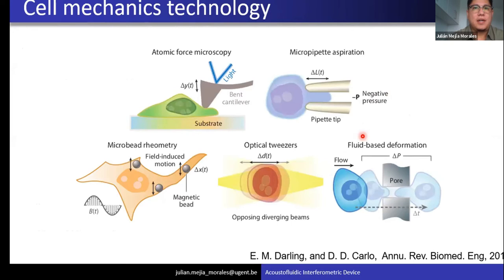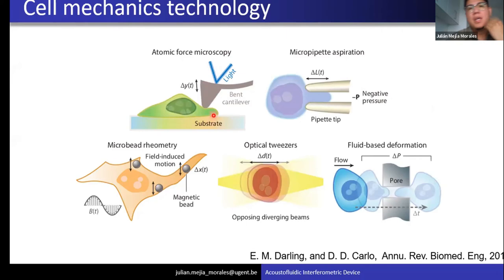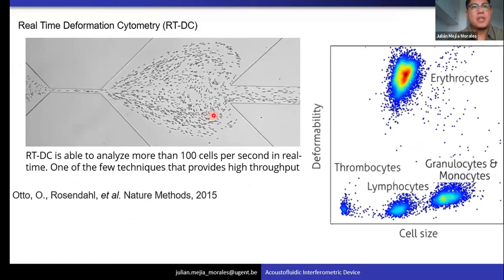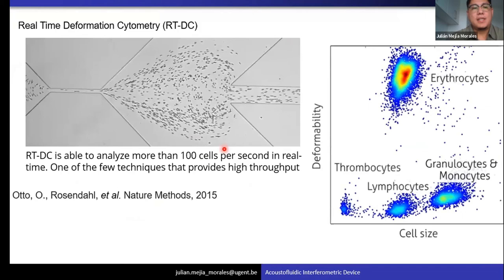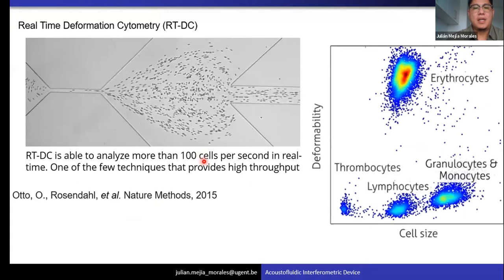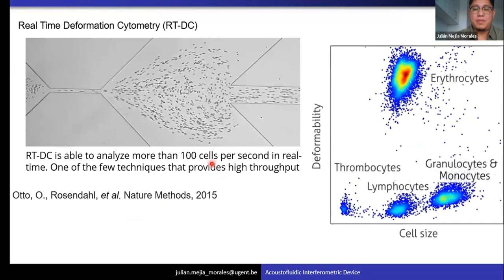This is not new. There exist already several techniques to assess the mechanical properties of cells. The most relevant and most commonly used one is atomic force microscopy. The only problem is these techniques are not high-throughput — just to measure one cell with AFM takes on the order of minutes. The only approach that reaches high-throughput in mechanical assessment is real-time deformation cytometry, which uses a high-speed camera to detect cell deformability in real-time, with a throughput of 100 cells per second. This throughput allows clearly differentiated clusters in scatter diagrams.